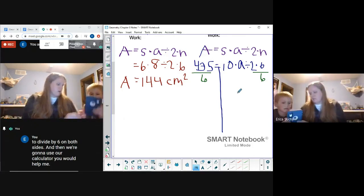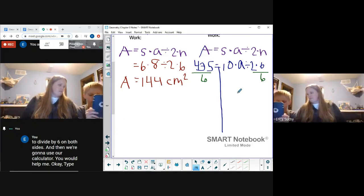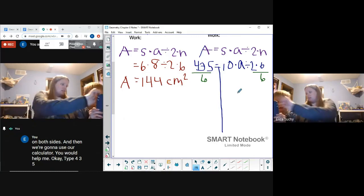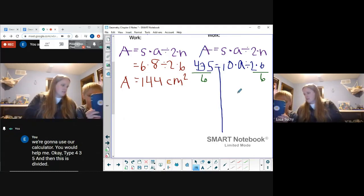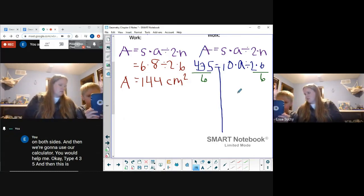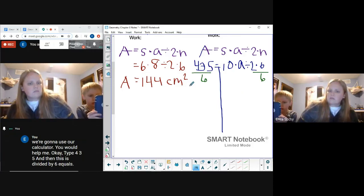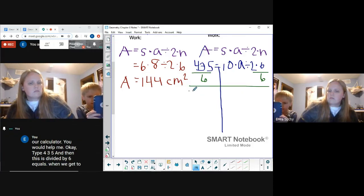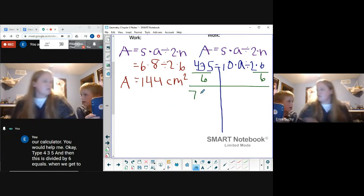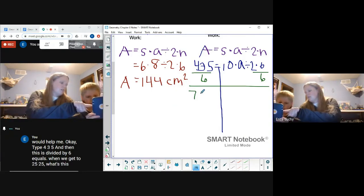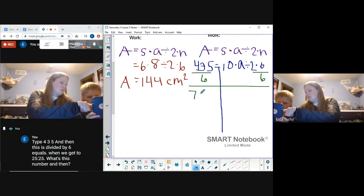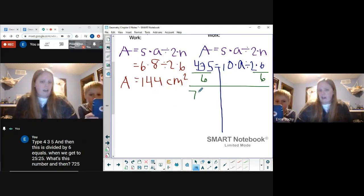Type 435, and then this is divide 6 equals. What do we get? 72.5.